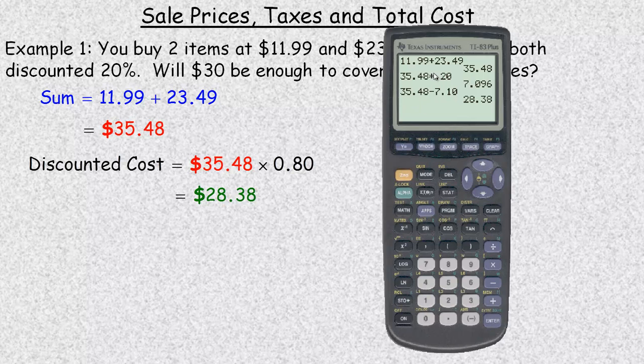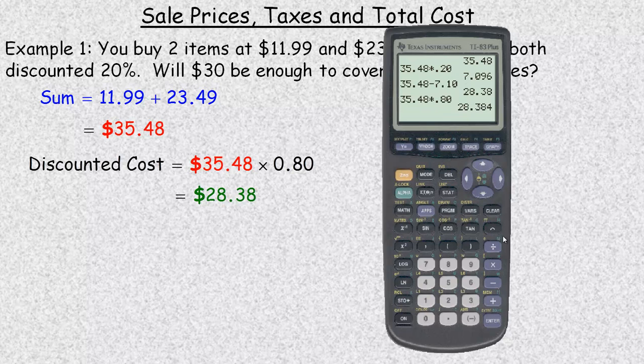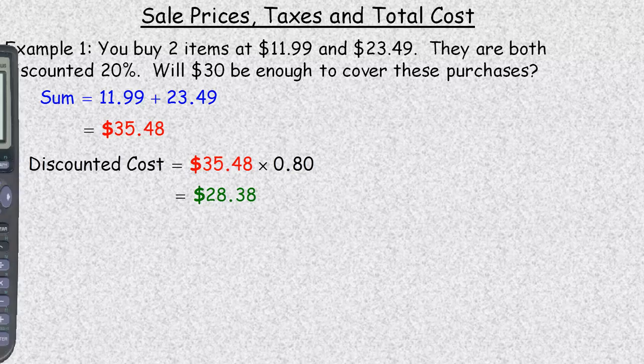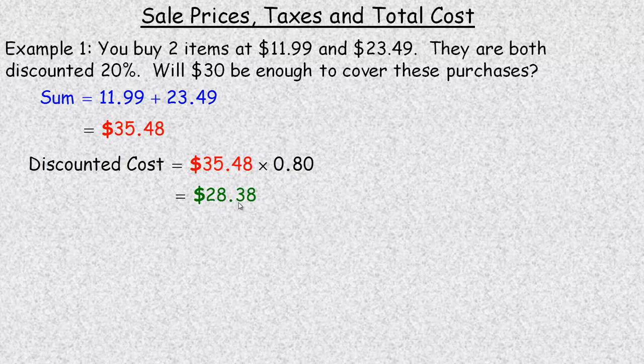That's two different ways to calculate. You could calculate the discount and then subtract that, but it is a quicker calculation if all you want to do is find the end result—instead of taking 20% off, just multiply it by 80%.